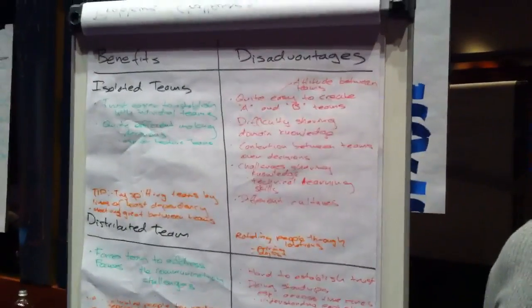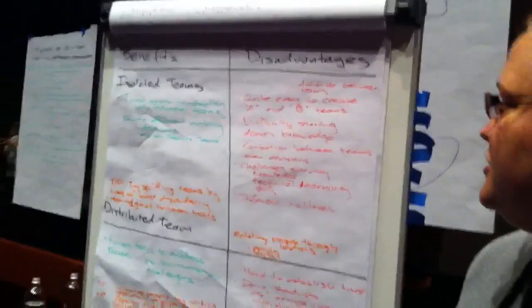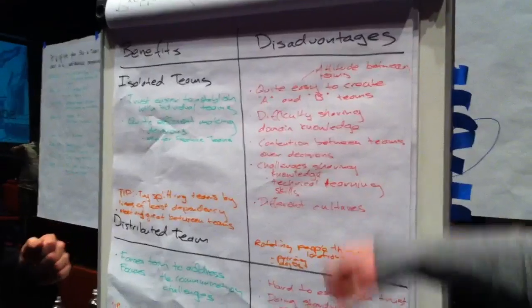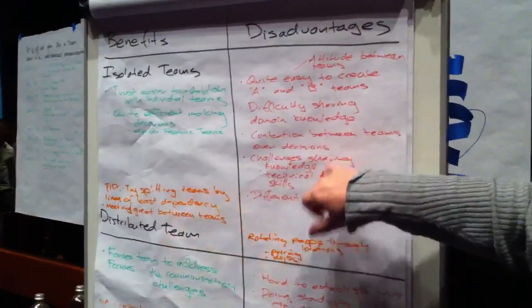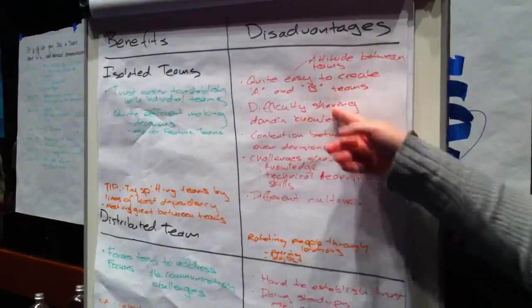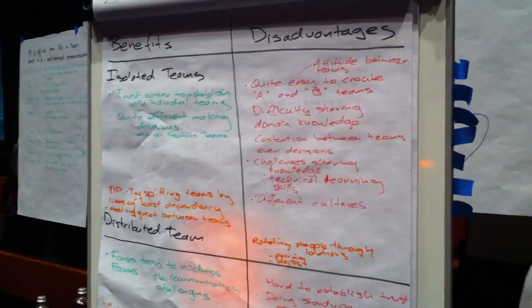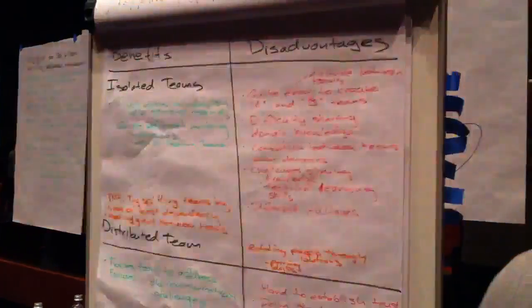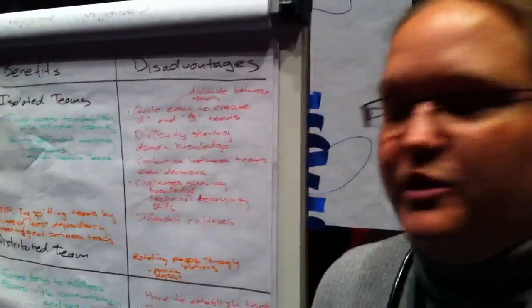We also thought for those teams it would be more efficient to make decisions because they could make them locally. But a lot of the problems there can be that it's difficult when those teams in different locations need to make decisions together. So there's a lot of contention about decisions, it's difficult to share knowledge, there are different cultures and things like that — all of which impact the communication between the two teams.